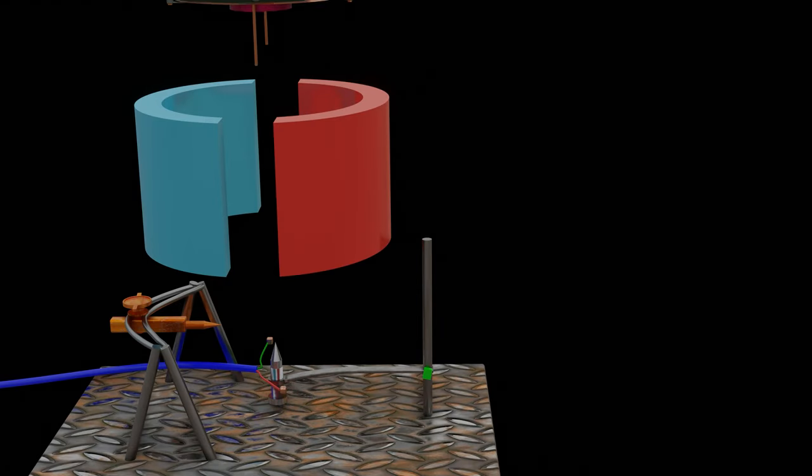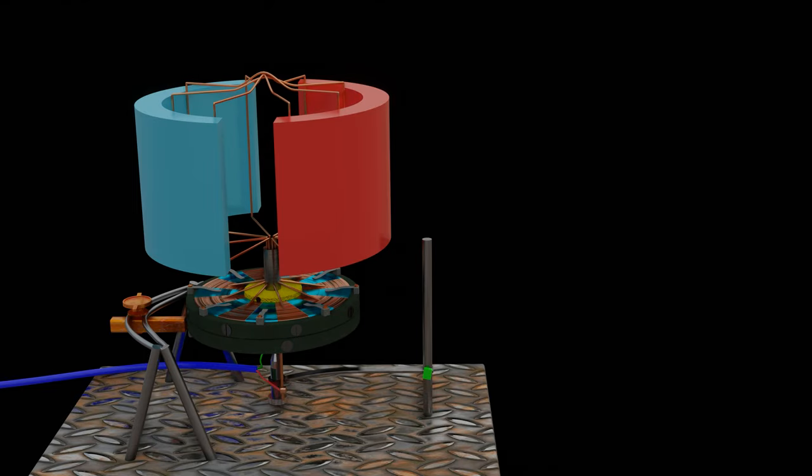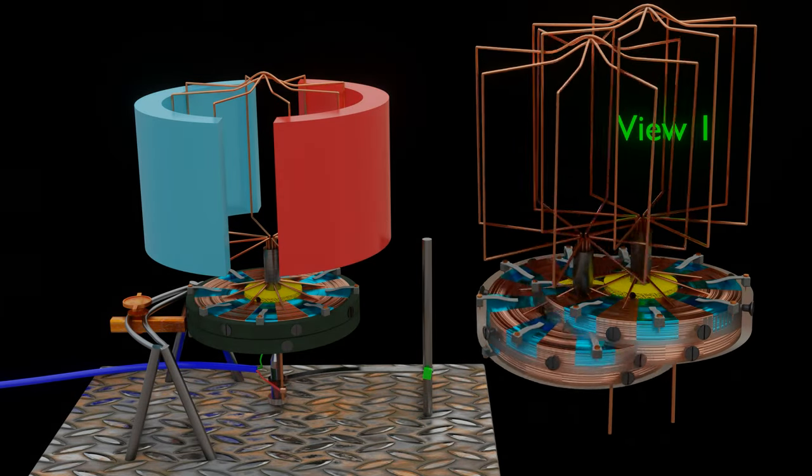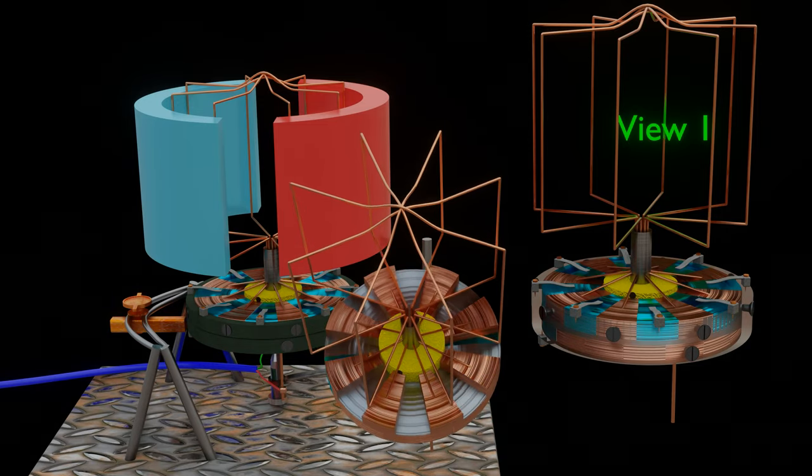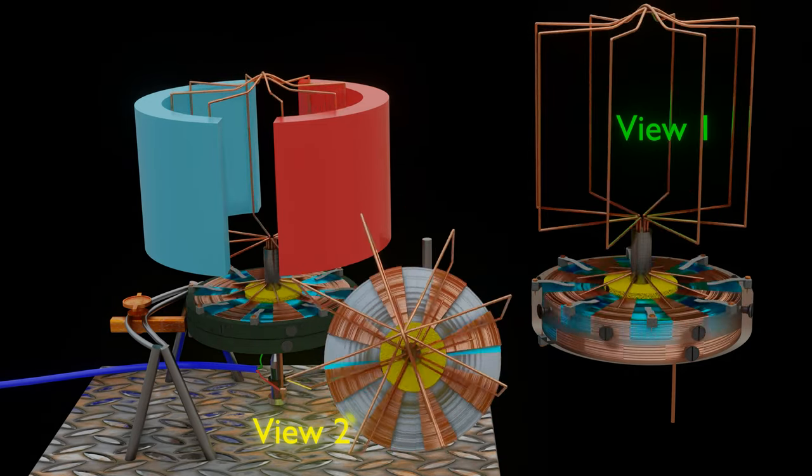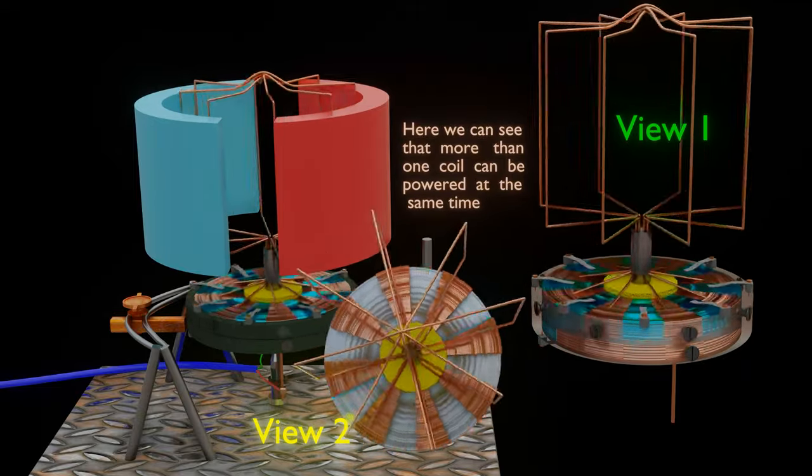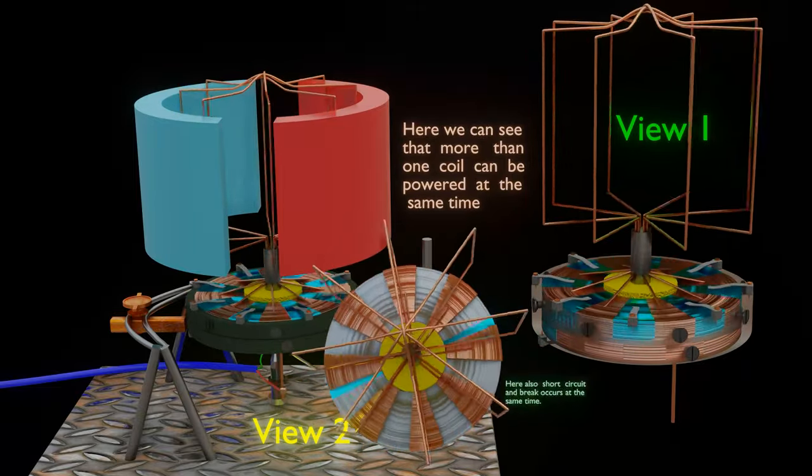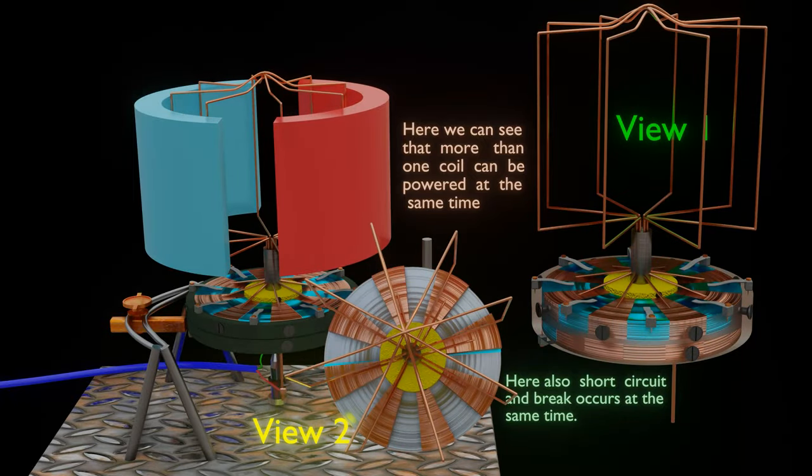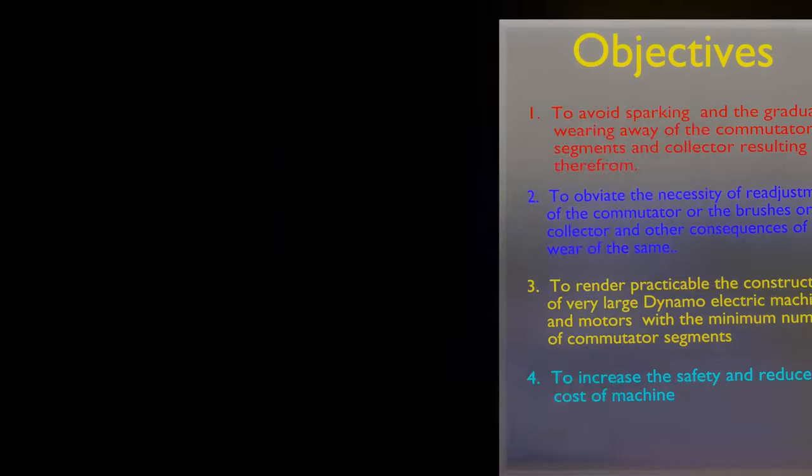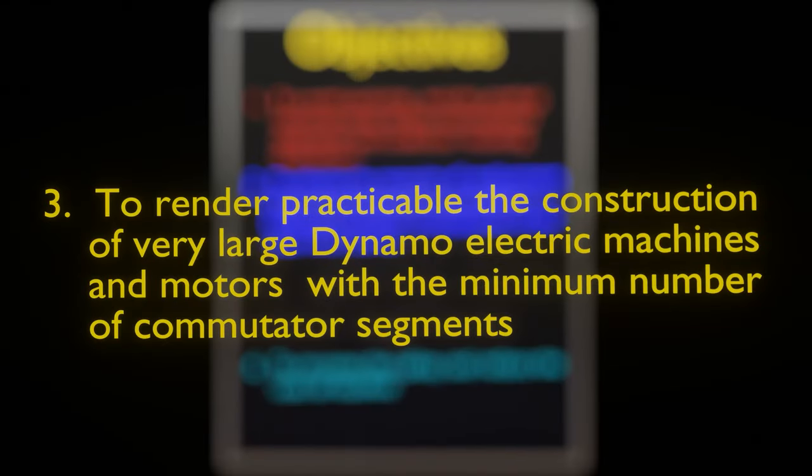Now, with a slight change in design, we can power more than one coil at the same time. This makes the construction of very large dynamo electric machine practicable with this commutator design. And note, we have not added any extra commutator segments here. We have just split the previous commutator segment. So Tesla's third objective has been fulfilled.